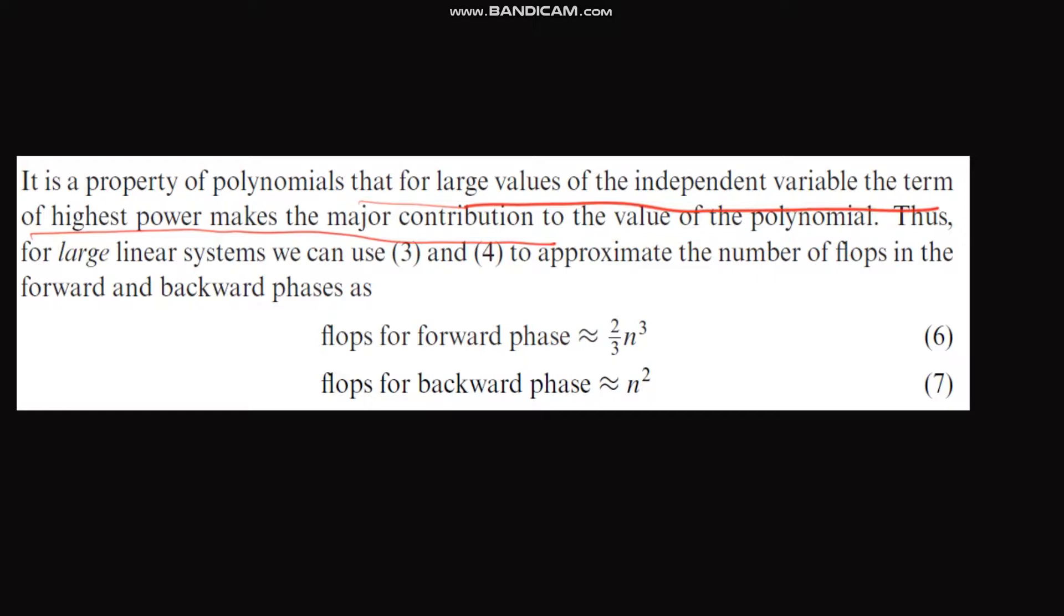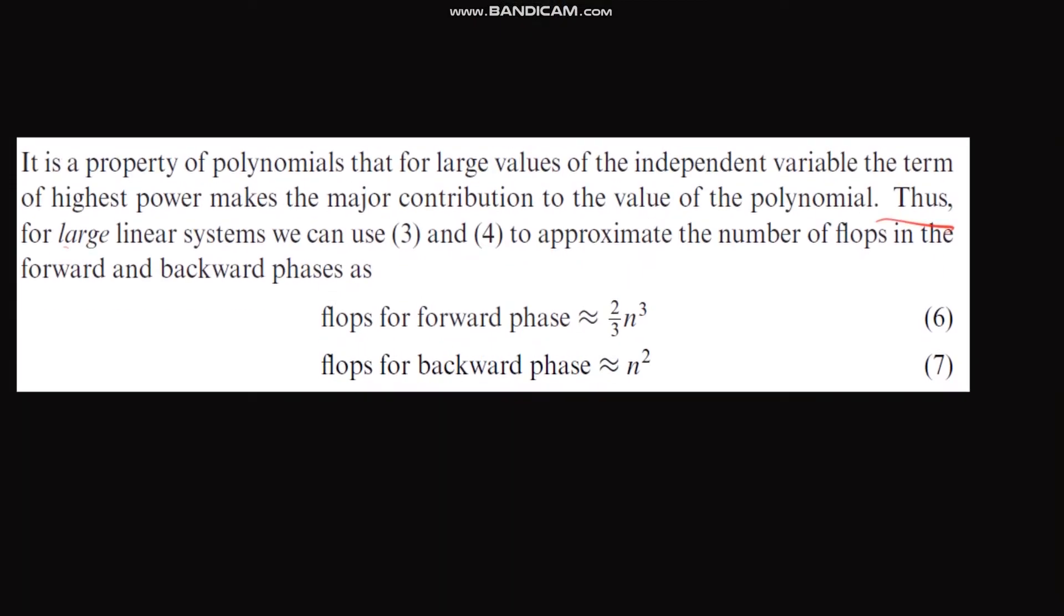So similarly, for large linear systems we can use these for the approximation number of flops. For the forward phase we need approximately 2 upon 3 n cubed flops, and for the backward we need n square flops.